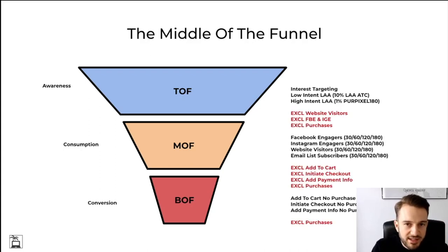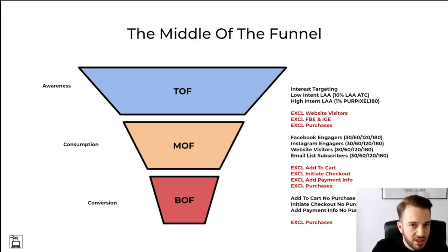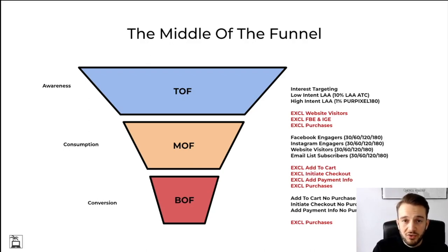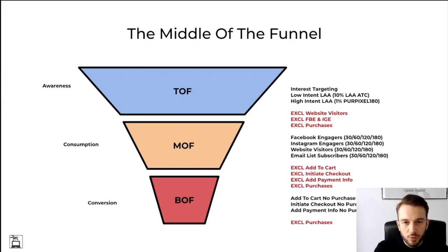You can also exclude certain audiences if you want to be very specific, though I'd only do this if your store is big enough. For the top of the funnel, you can exclude website visitors, people who engaged on Facebook and Instagram, and purchases — you want to show a different message to those who've already been on the store versus those who've never heard of it. If you want your middle-of-funnel to run successfully, focus on those who've been on the website or engaged on Facebook, and show them a different message than those who haven't heard of the store at all.